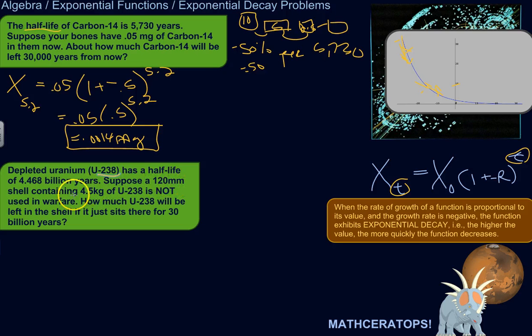Suppose a 120-millimeter shell containing 4.5 kilograms of U-238 is not used in warfare, so it's just going to sit there. Meaning it's not shot at something so that it explodes and becomes vaporized in the dust particles. Basically we're simplifying the problem here. So we've got a shell, a very large shell, it's going to sit there. It's got 4.5 kilograms of this uranium isotope. And that uranium has a half-life of 4.468 billion years. So how much U-238 will be left in the shell if it just sits there for 30 billion years? We're looking forward into the future.